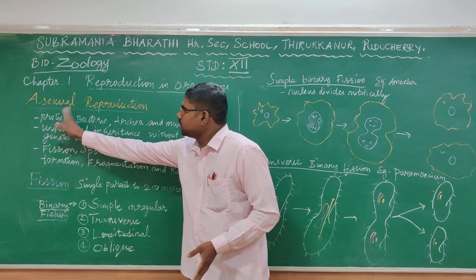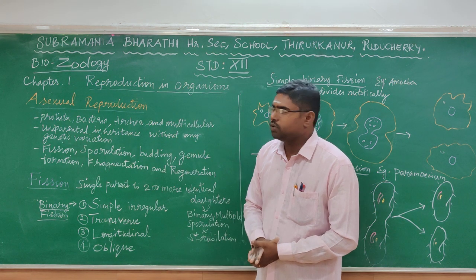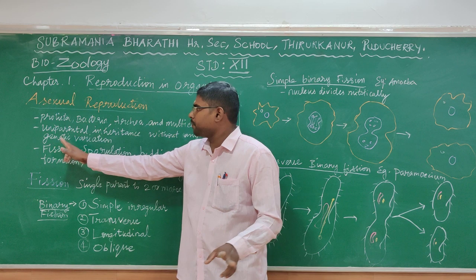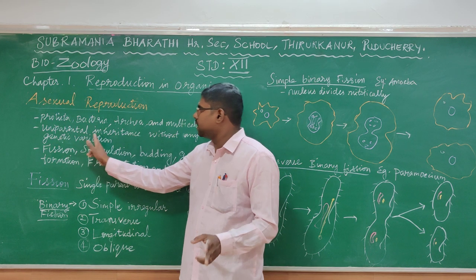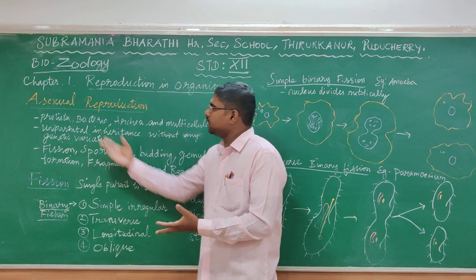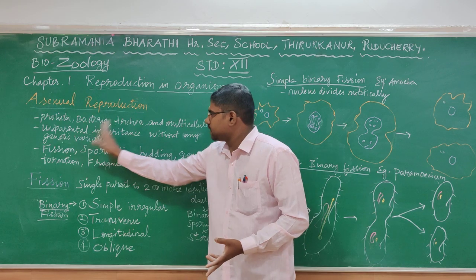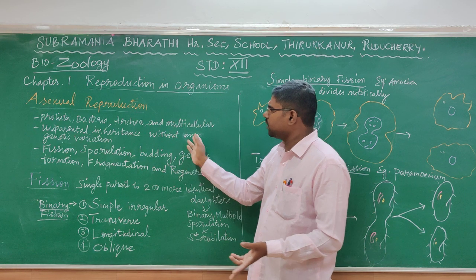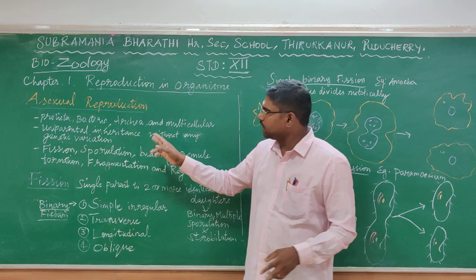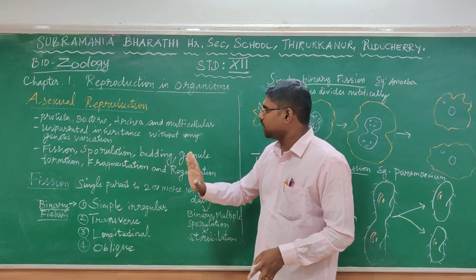This type of Asexual Reproduction exhibits uniparental inheritance. What is uniparental inheritance? Uni means single — a single parent. The daughter receives the character from that single parent. That is why it is called uniparental inheritance. Also, there is no genetic variation — no variation is seen in the daughter formed by Asexual Reproduction.